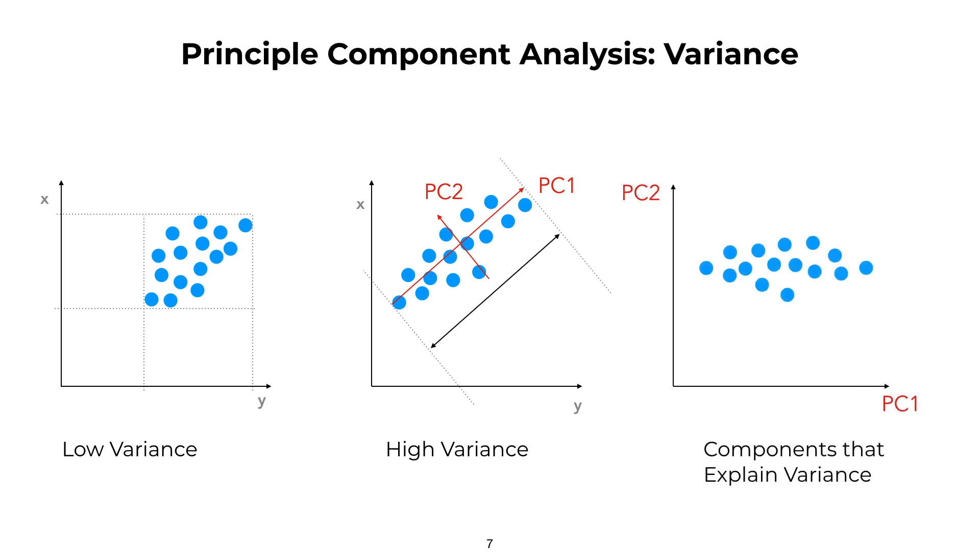When we select the principal components that explain the most variance of our data, we can project all of our samples into this space and visualize the full dataset. This technique is called principal component analysis, and it can be very helpful in the initial stages of our analysis.